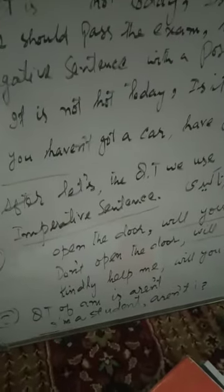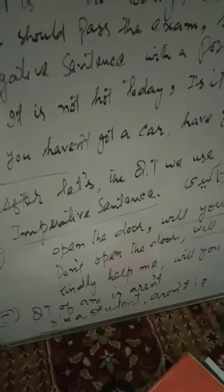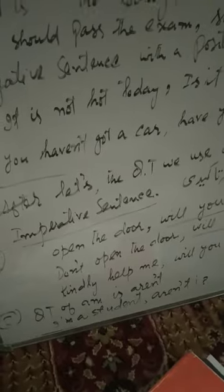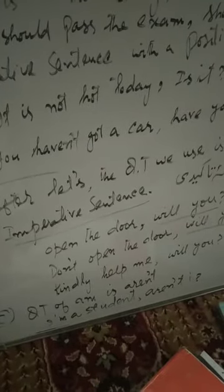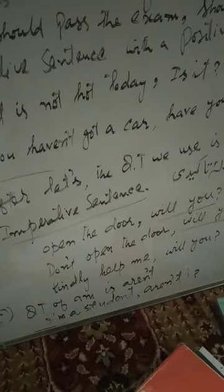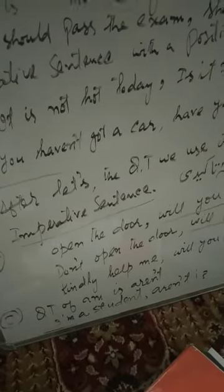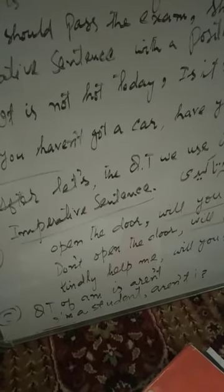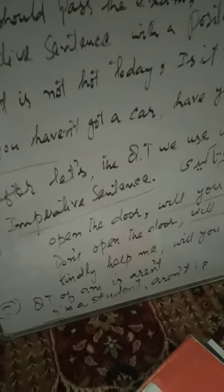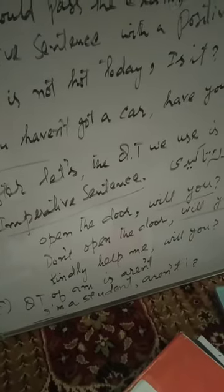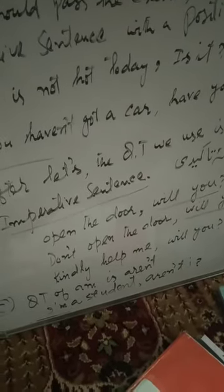Next rule: if a sentence starts with 'I am', for example, 'I am a student', the question tag will be 'aren't I?' Another example: 'I am too impatient' — question tag: 'aren't I?'